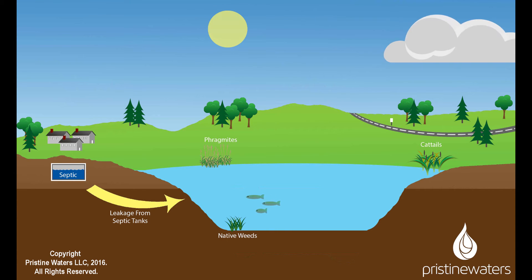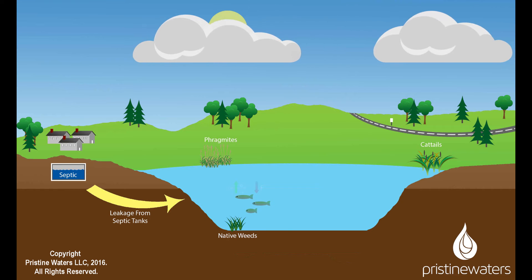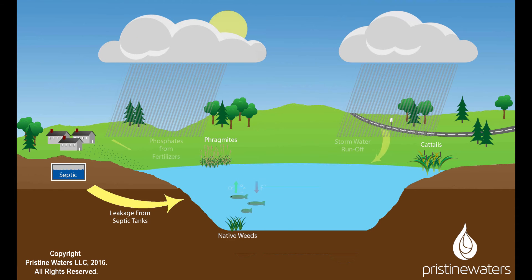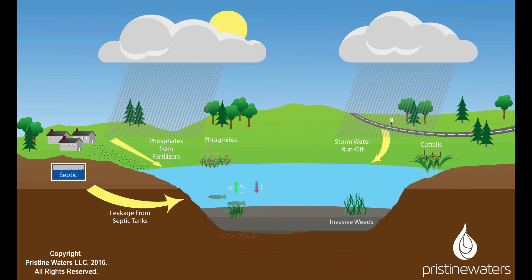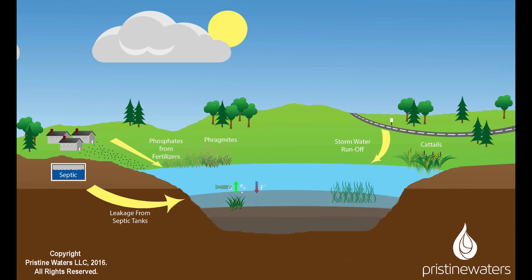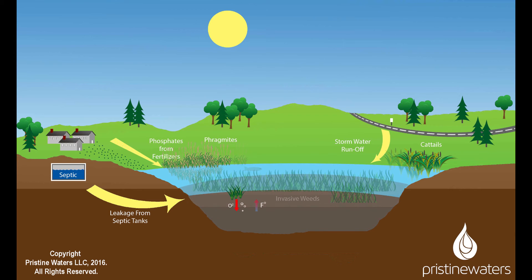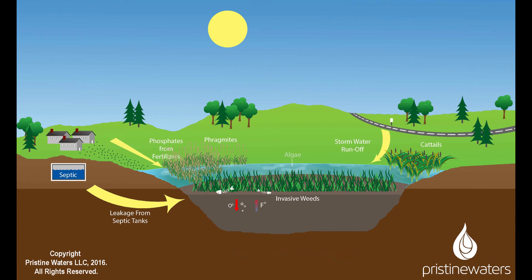Often, invasive non-native aquatic weeds appear and spread from migratory wildlife and boats being moved from one water body to another. As these weeds grow and die, and in combination with the aforementioned nutrient loading, a nutrient-rich layer of organic sediment begins to fill in a lake or pond.